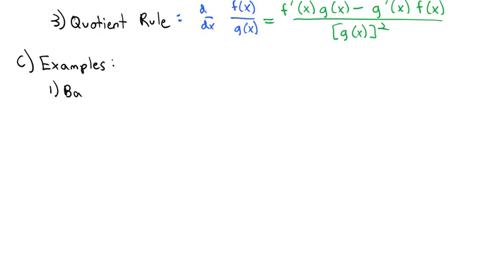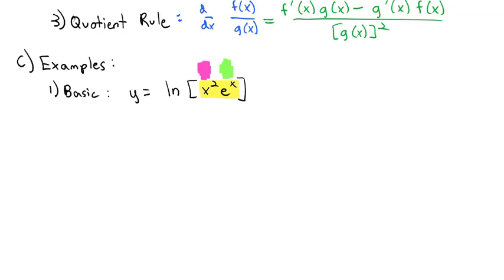Number one, we're going to look at just a basic example. Let's say y equals the natural log of x squared times e to the x. Looking at the pieces here, we're going to have a chain rule going on because we've got the natural log of stuff. But then inside that stuff, there's a product rule — we've got x squared times e to the x. So we're going to use both the chain rule and the product rule here.